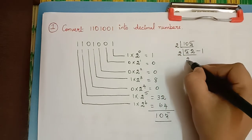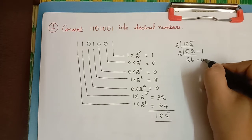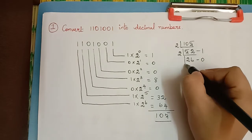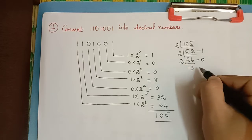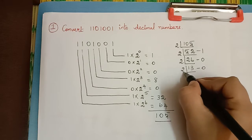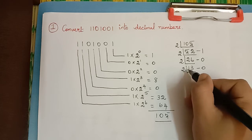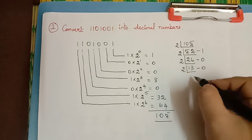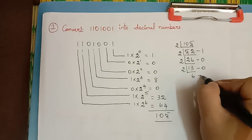26 divided by 2 is 13, and the remainder is 0. Now 13 divided by 2: 13 is not divisible by 2. The number lesser than 13 divisible by 2 is 12, which is 6 times 2. So the remainder left out is 1.